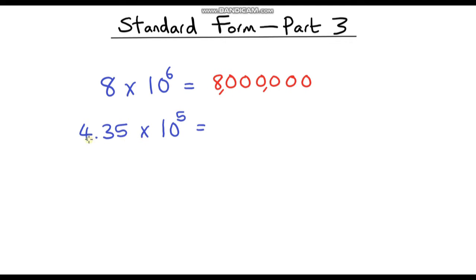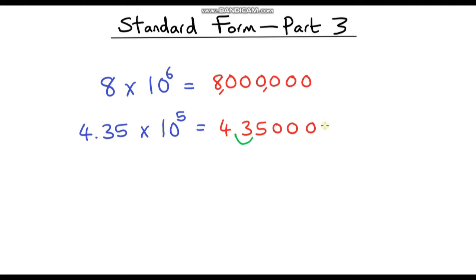The next example is 4.35 times 10 to the power of 5. Let's write out the base number: 4.35. This one's slightly different because we've got a decimal point. When we've got a decimal point and we're multiplying by 10, we just move the decimal point to the right. Moving it once gives 43.5, but we need to multiply by 10 five times, so we move the decimal point five places to the right. We can't do that yet, so let's add some zeros in as placeholders.